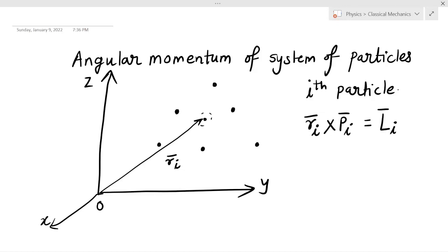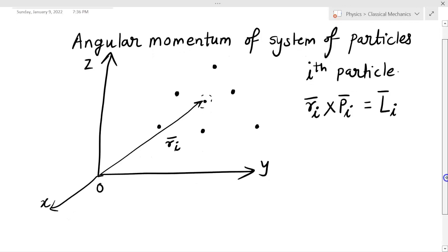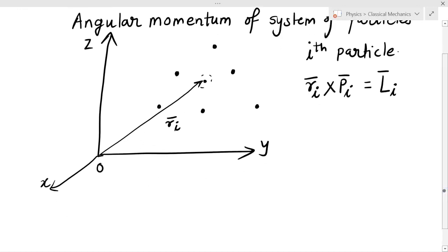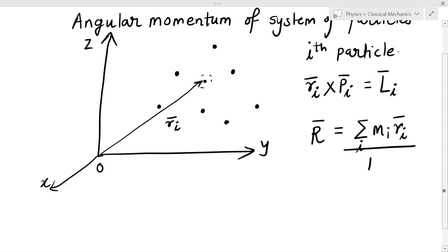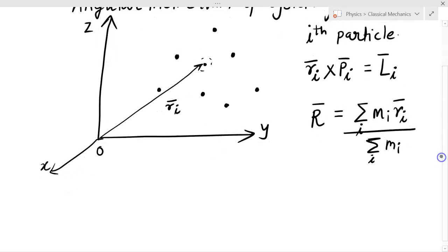The angular momentum for the i-th particle is r_i bar cross p_i bar. Now I want to describe the effective angular momentum of the whole system. I will also define a center of mass, which is given as summation over i of m_i r_i bar, divided by summation over i of m_i.